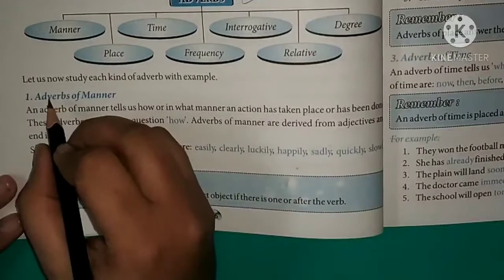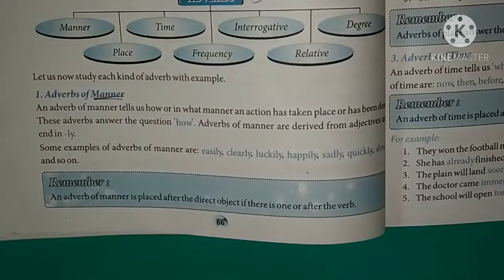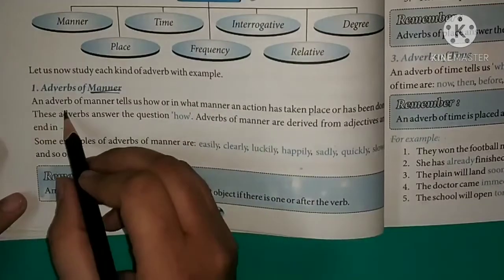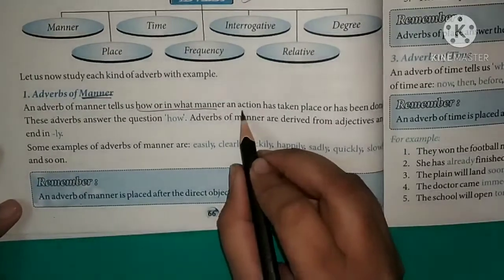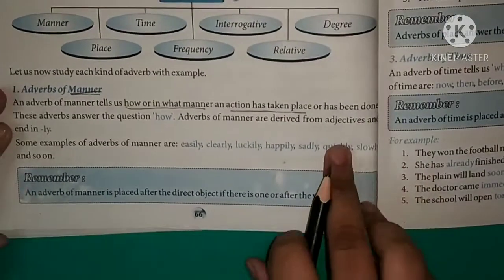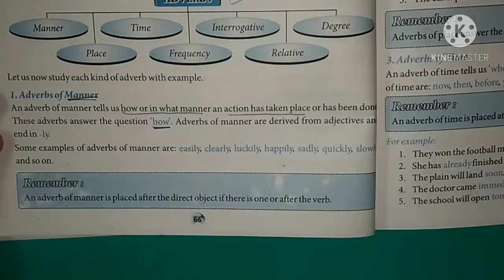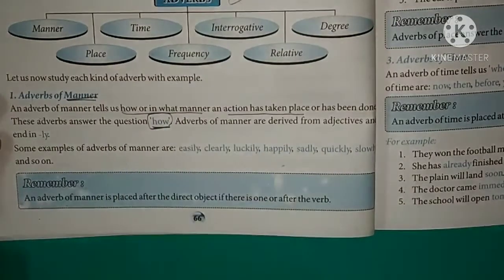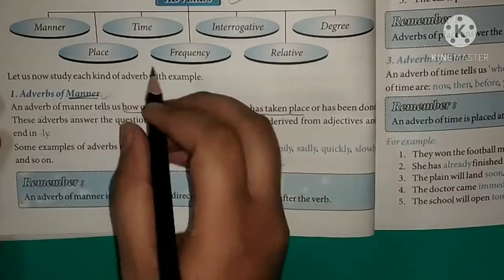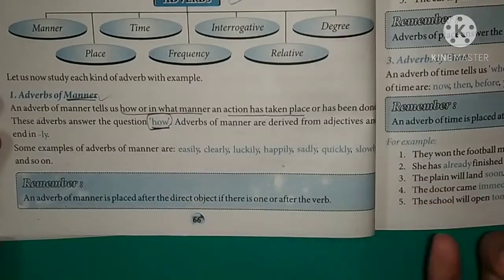Let's study the first kind: Adverbs of Manner. An adverb of manner tells us how, or in what manner, an action takes place or has been done. These adverbs answer the question 'how'. To find an adverb of manner, ask 'how is this action performed?' — the answer, such as 'nicely', is the adverb of manner. Adverbs of manner are derived from adjectives and generally end in -LY.